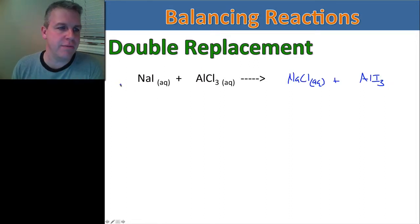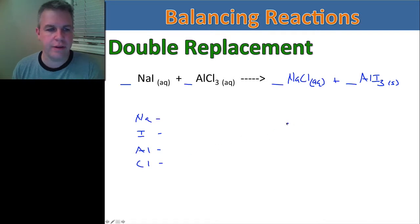So let's start to balance this now. So we have our little spot for our coefficients. We're going to balance this exactly the same way that we balanced our single replacement, and all the other reactions that we've looked at. So I'm going to write down all of the elements that I have on each side of the equation. So I have sodium, I have iodine, I have aluminum, and I have chlorine. Then on the other side, I'm going to write them in the same order. Sodium, iodine, aluminum, and chlorine.